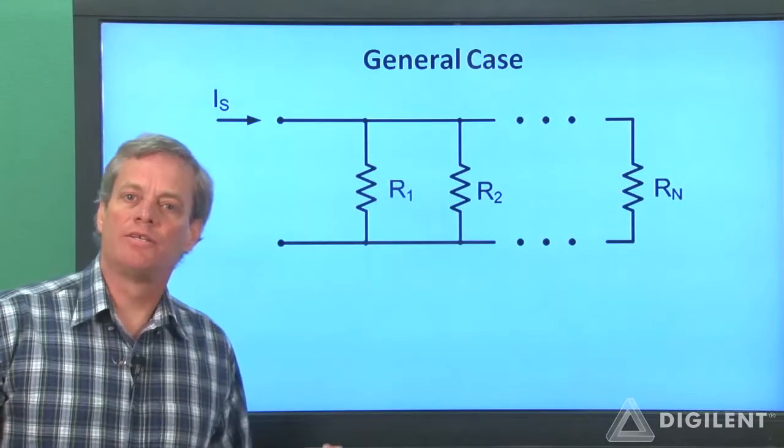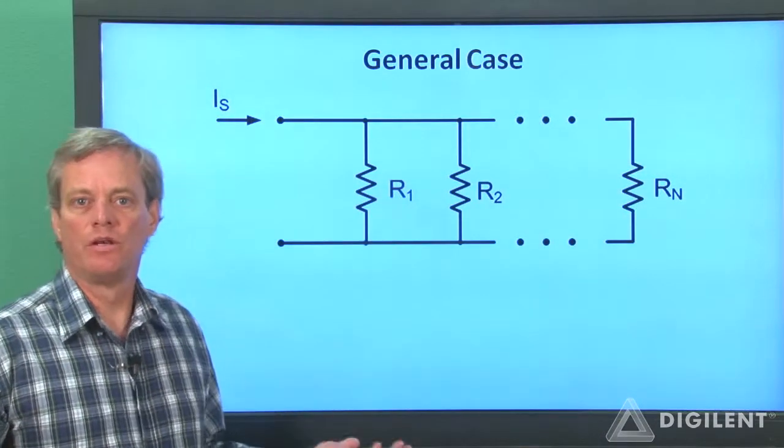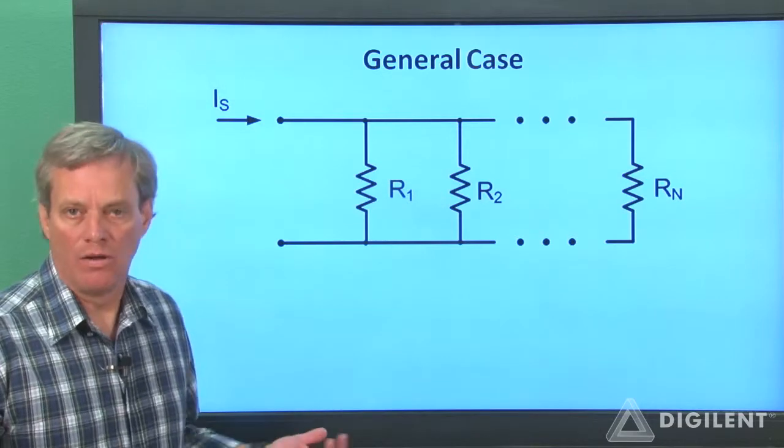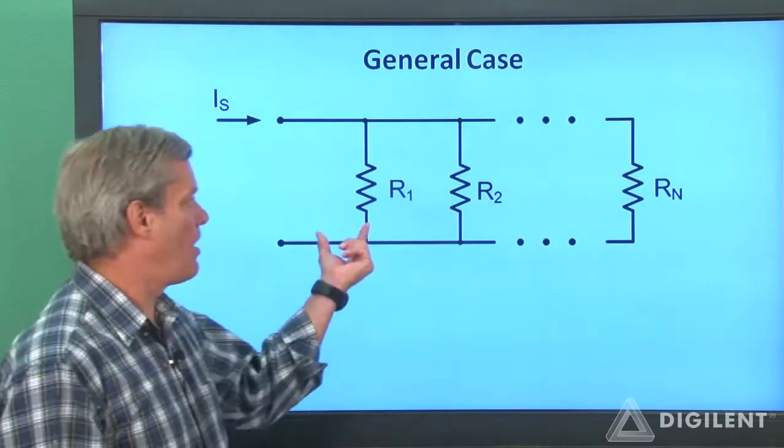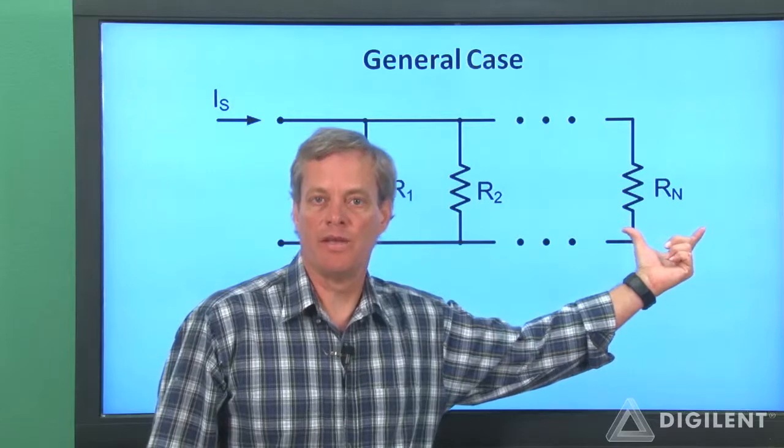We can generalize this result for an arbitrary number of parallel resistors. Suppose we have N resistors, all in parallel. Our resistors are R1, R2, and so on and so forth, up to R sub N.